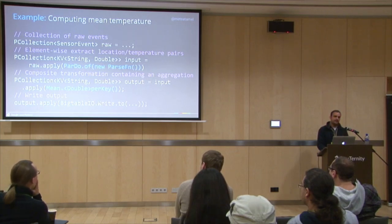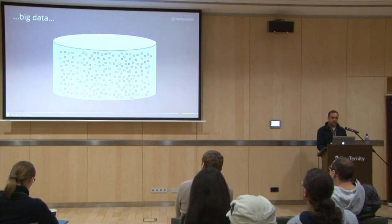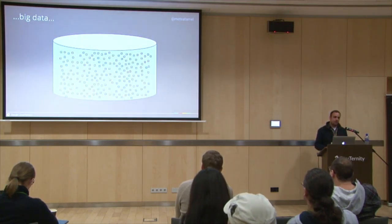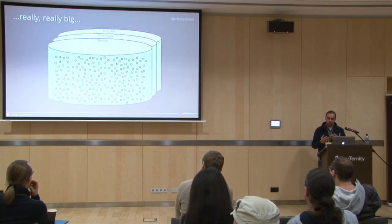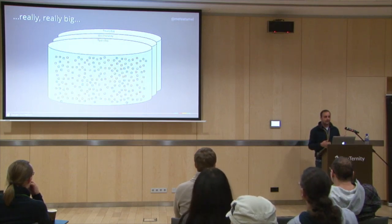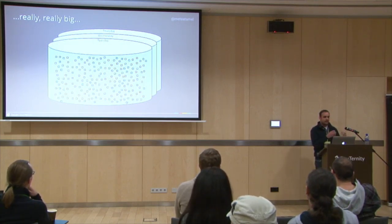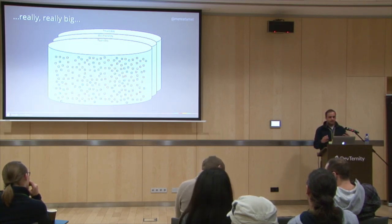Flume Java basically kick-started the API of Dataflow. Once people had Flume Java, they started processing lots of data. The more data you have, the more data gets in. One pattern is to break your data into small chunks — for example, logging data broken into days like Tuesday, Wednesday, and Thursday — and apply transformations per day. So you do batch processing of your data per day or per month, depending on what you want.